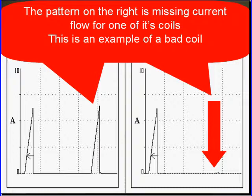The pattern on the right is missing current flow for one of its coils. This is an example of a bad coil. Compare it to the one on the left. The coil is good and you can see both of them. The one on the right, we have a missing event.